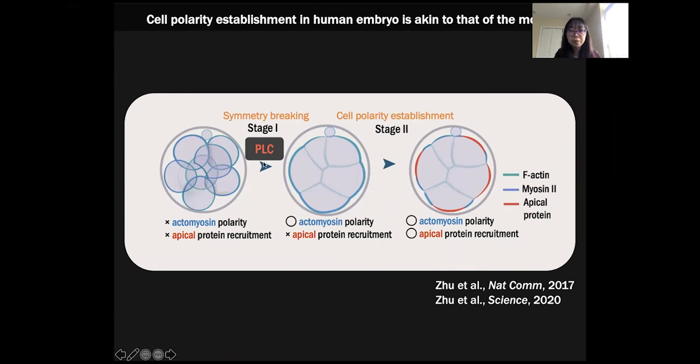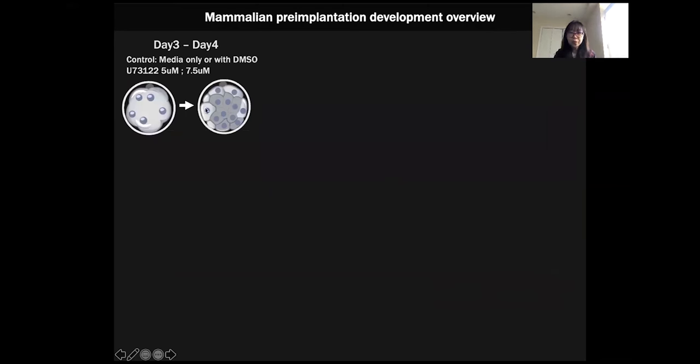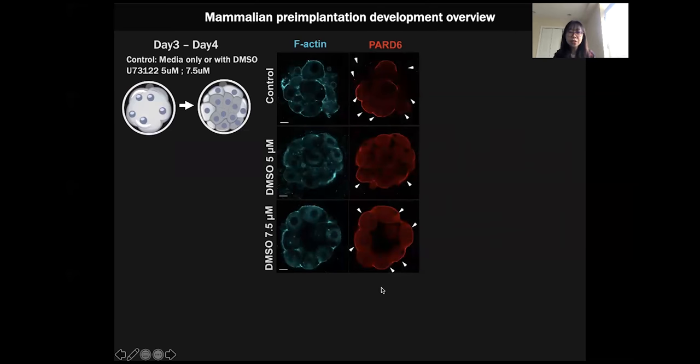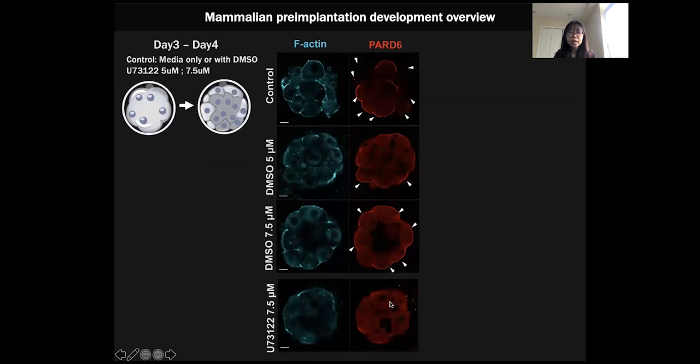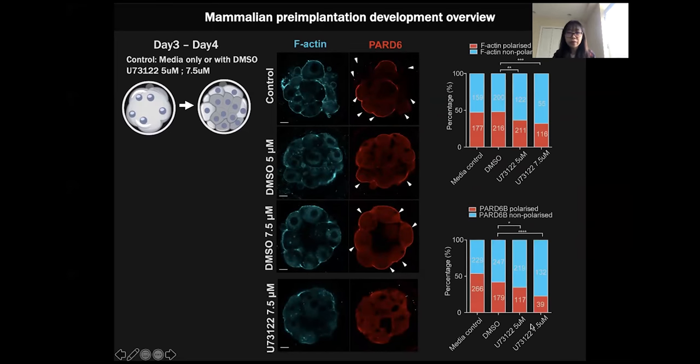In the mouse embryo, we found that this phospholipid, phospholipase C, is very important to trigger F-actin polarization and therefore the formation of the apical domain. If you inhibit PLC, you don't really get the apical domain to form. We wanted to see whether this is actually true in humans. We treated with a pan-PLC inhibitor between day 3 and day 4 of human embryo development. We found that in different control conditions, the Par complex becomes polarized to the cell-contact-free surface, but embryos with PLC inhibited don't really have this polarization of Par6 anymore. This suggests that PLC might be important for polarization as well.